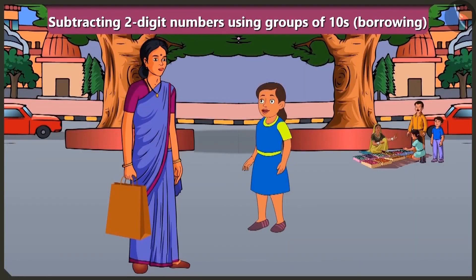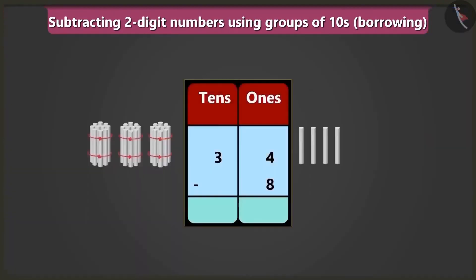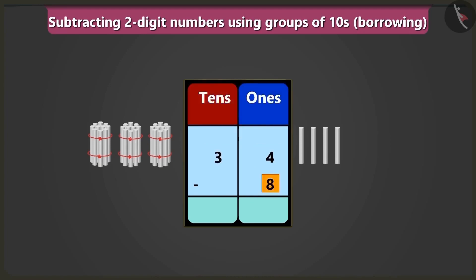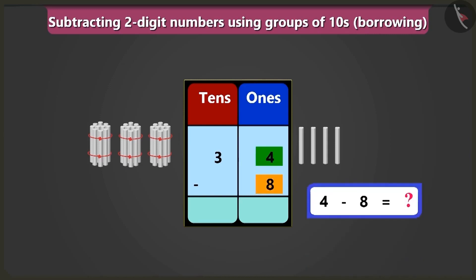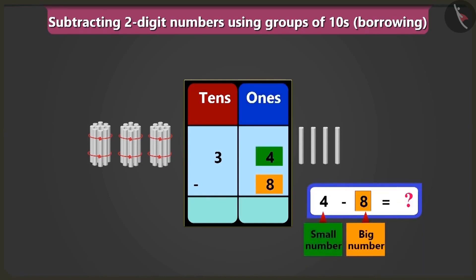Mommy, how is subtraction done? Come, I will explain. Look, to subtract eight from thirty-four, we will write thirty-four and eight in the box of ones and tens. Thirty-four means three tens and four ones. Now we have eight ones, so we will write it in the box of ones. Its box of tens will stay empty. Now first of all, we will have to subtract eight from four in the box of ones. But here four is smaller than eight in the box of ones. So how will we subtract eight from four?